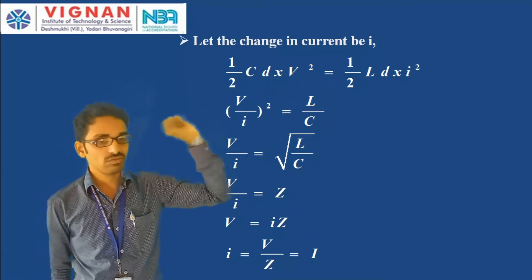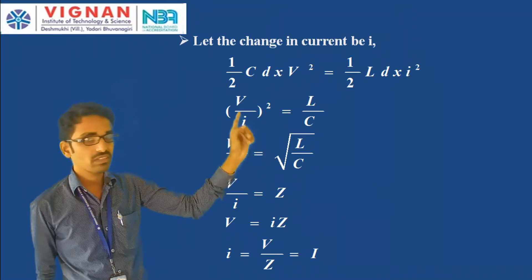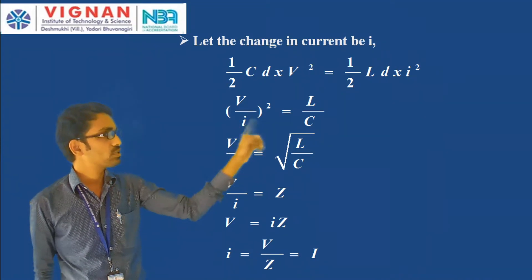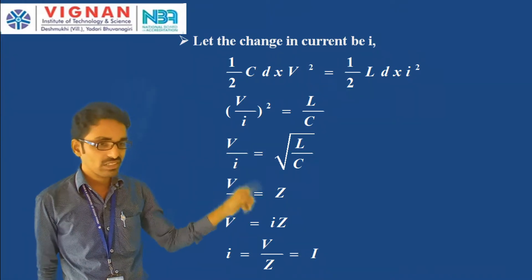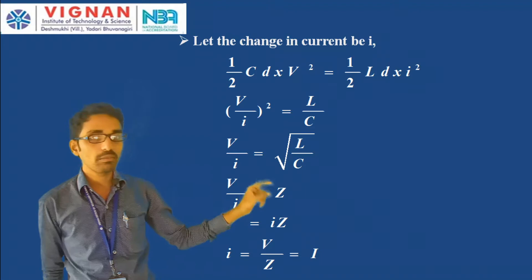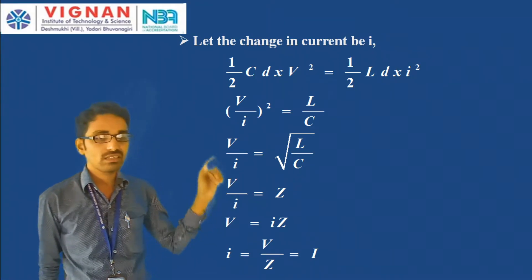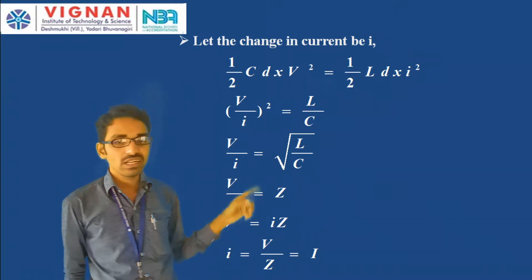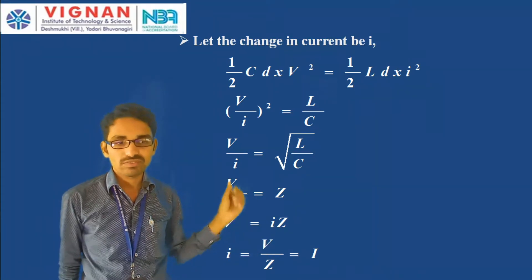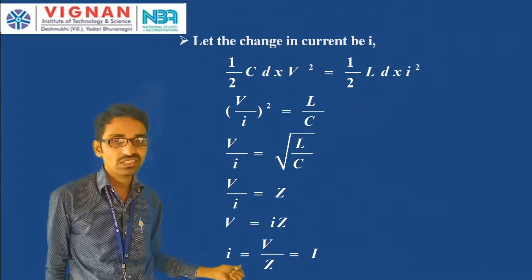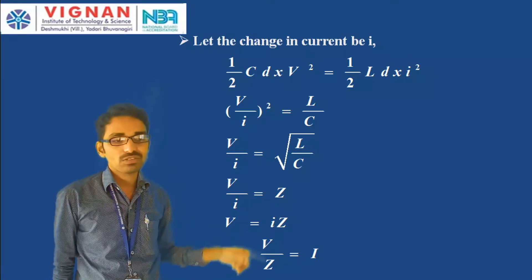Solving that equation gives V/I whole square equal to L/C, so V/I equals the square root of L/C. V/I is nothing but Z, the characteristic impedance of the line, so V = I·Z, meaning I = V/Z. Here small i is the change in current assumed, and capital I is the actual current wave reaching the receiving end.